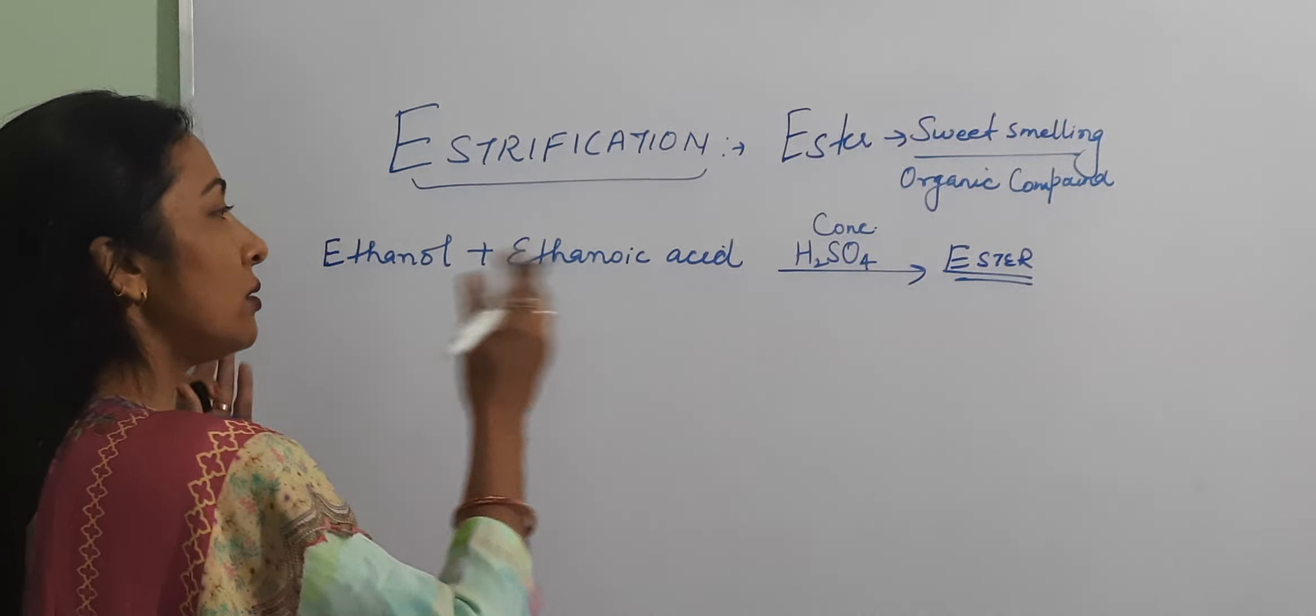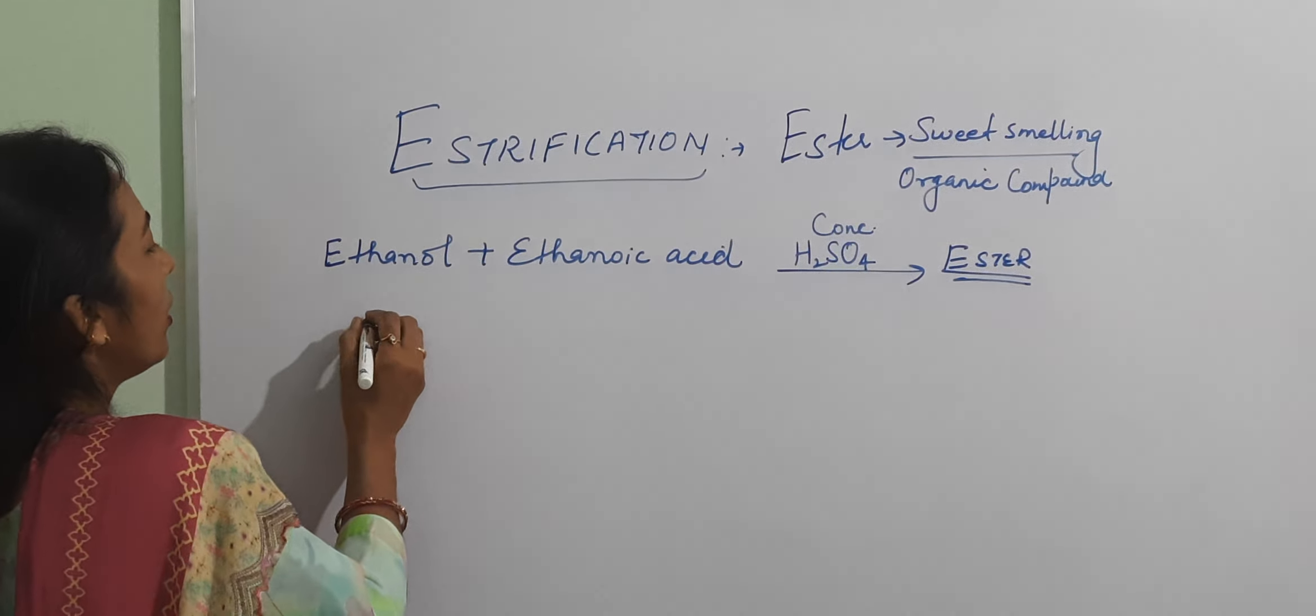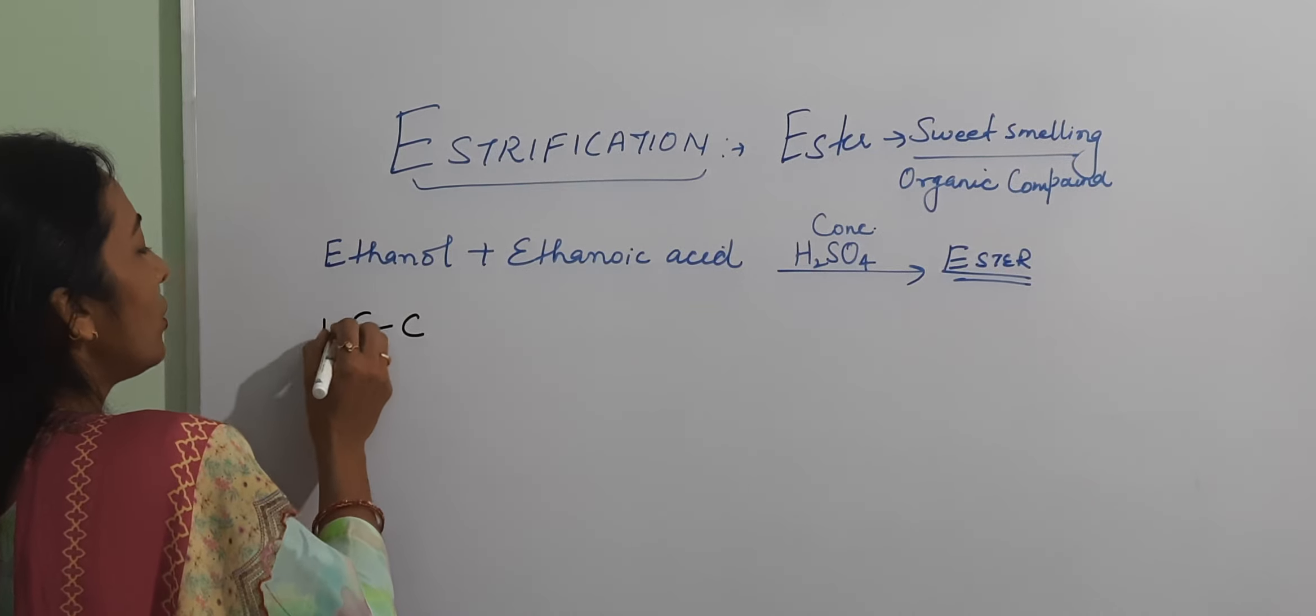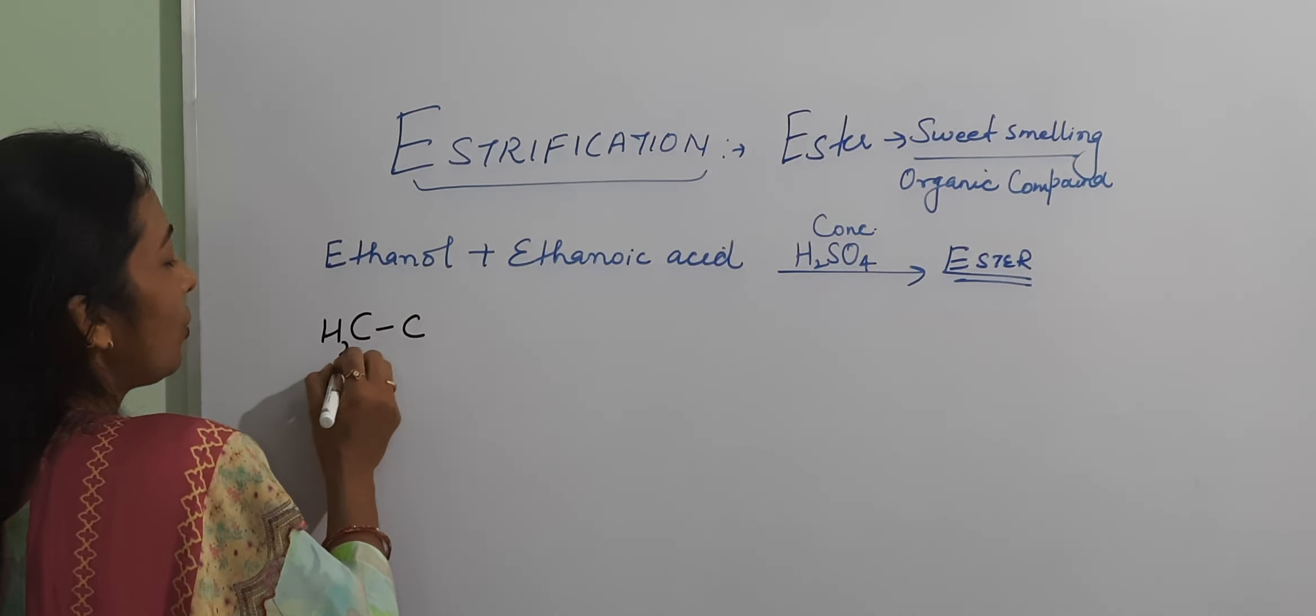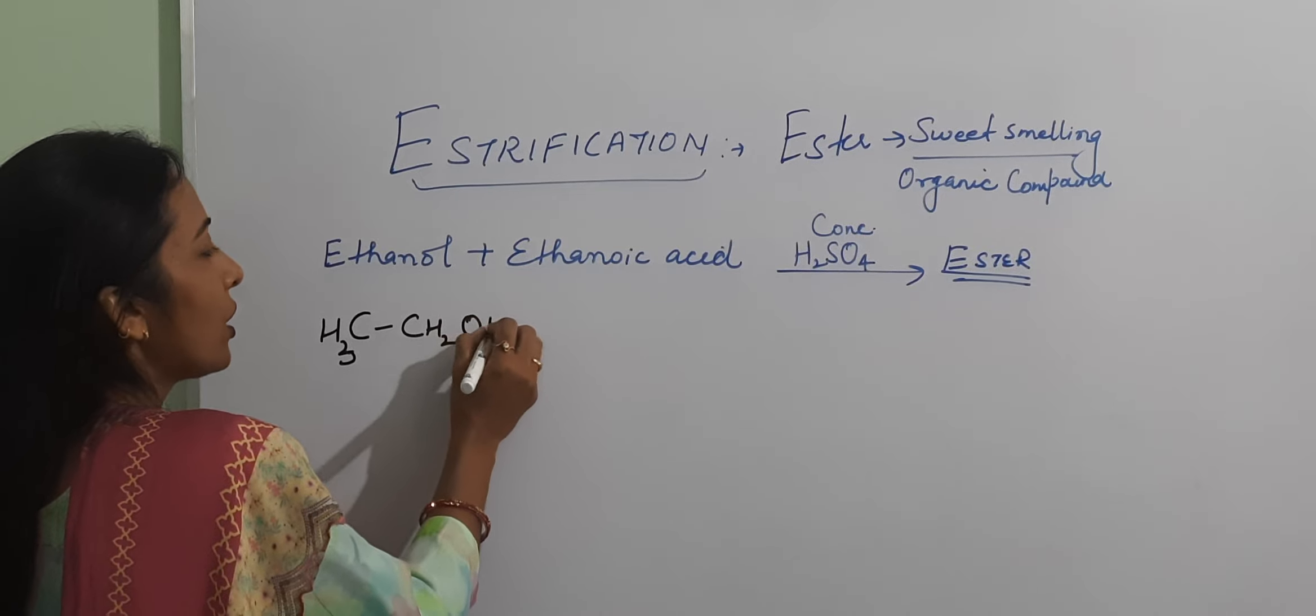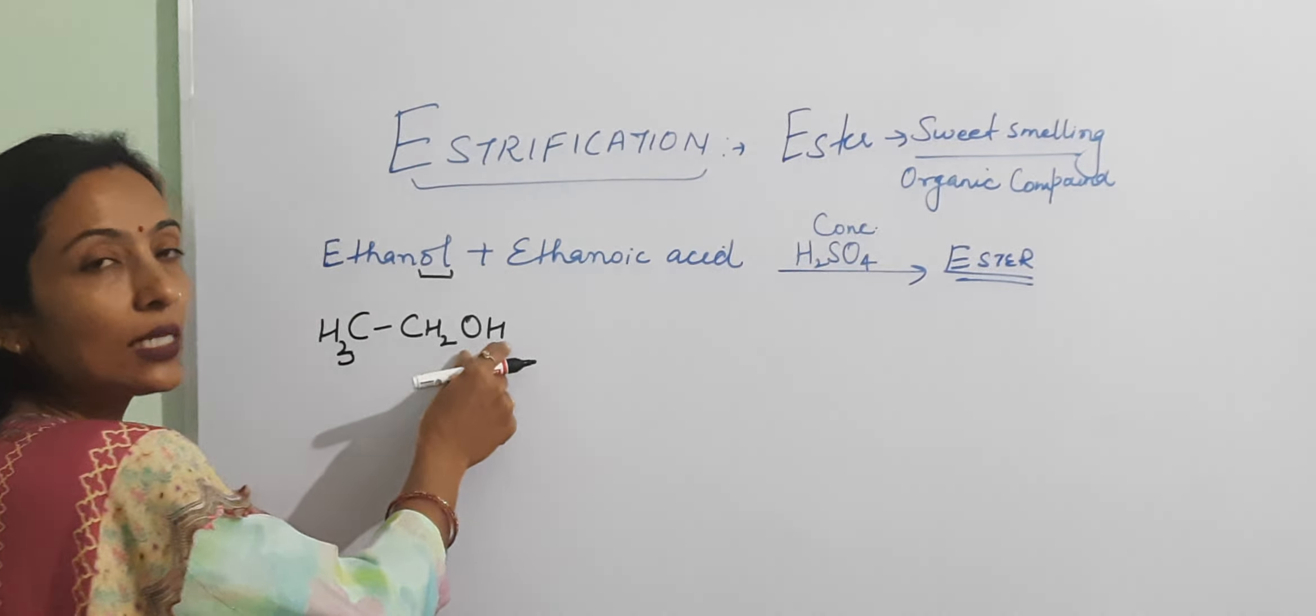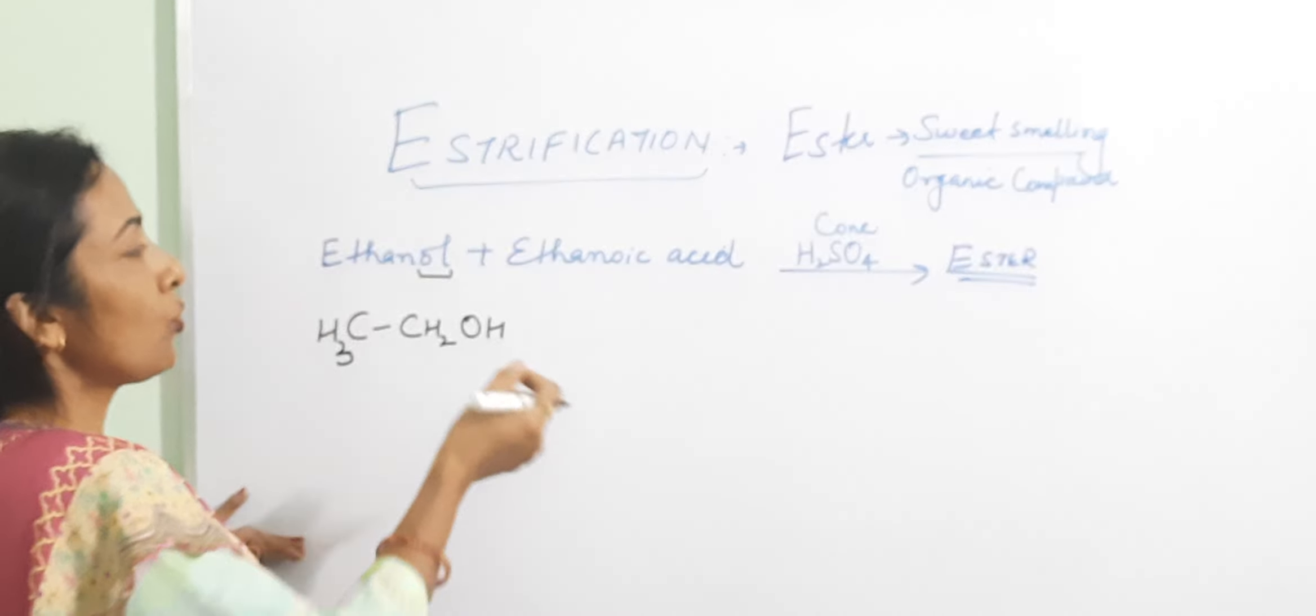Now we will write it symbolically. How many C will be there? Two. So ethanol, that is CH3, CH2 and OH. Because it ends up with OL, means it is having the functional group OH.